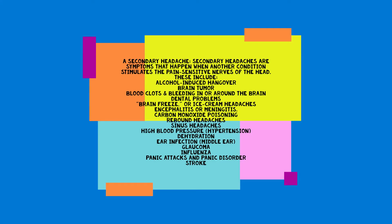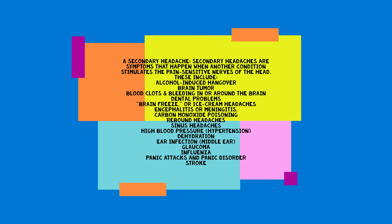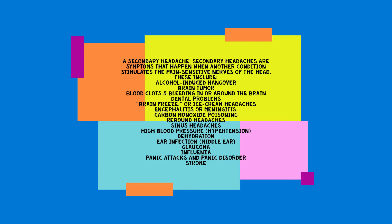Secondary headaches are symptoms that happen when another condition stimulates the pain-sensitive nerves of the head. These include alcohol-induced hangover, brain tumor, blood clots and bleeding in or around the brain, dental problems, brain freeze or ice cream headaches, encephalitis or meningitis, carbon monoxide poisoning, rebound headaches, sinus headaches, high blood pressure, dehydration, ear infection, middle ear, glaucoma, influenza, panic attacks and panic disorder, and stroke.